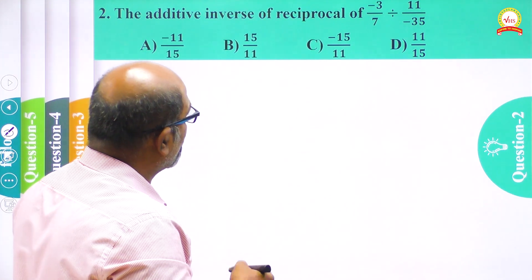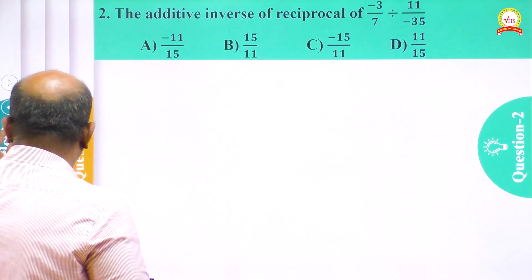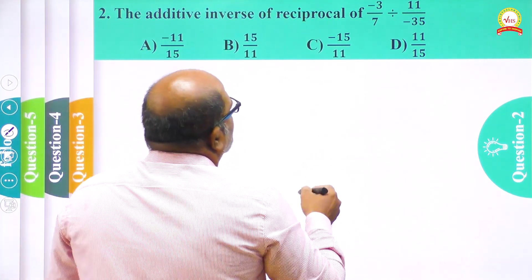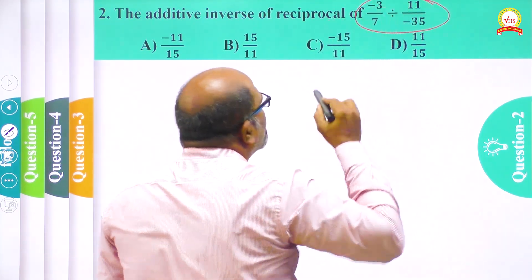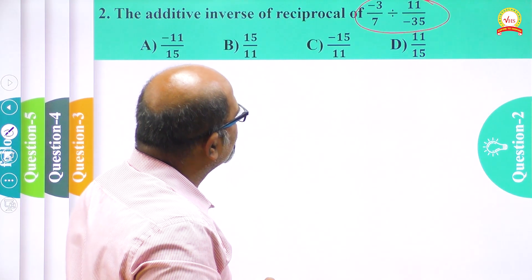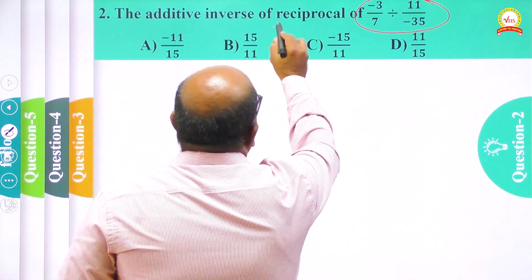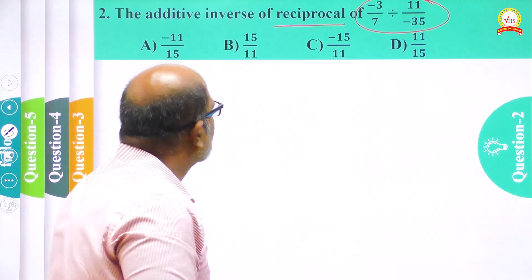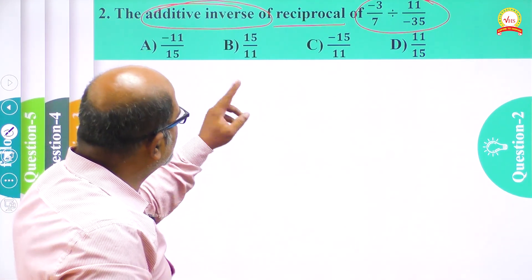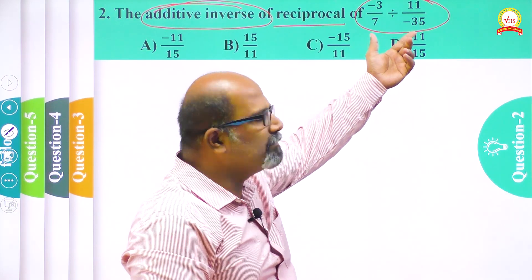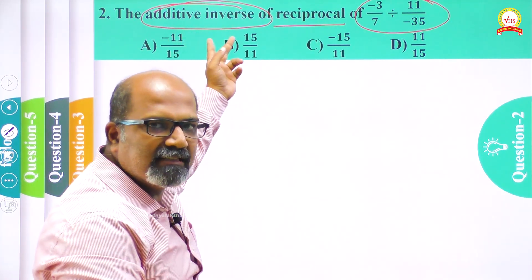This question is actually different. My approach will be like this: first I will simplify minus 3/7 divided by 11/minus 35. After simplifying that I will find the reciprocal, and after finding the reciprocal I will find the additive inverse. So there are 3 steps in this problem: simplify the expression, find the reciprocal, and then find the additive inverse. You have to look at the question clearly before proceeding.